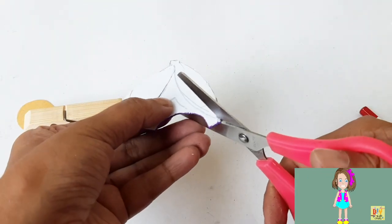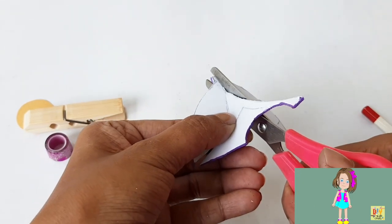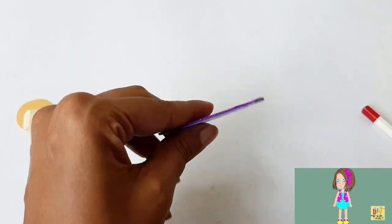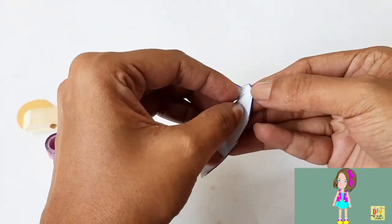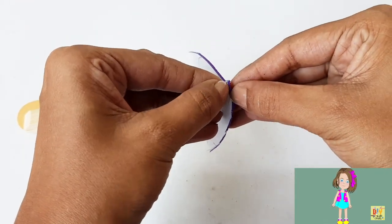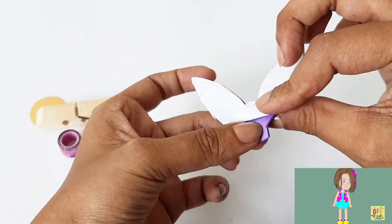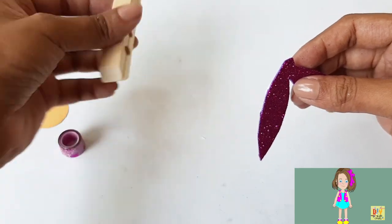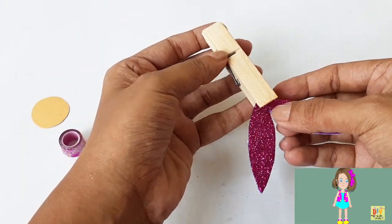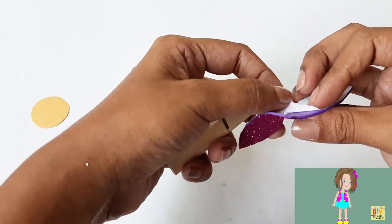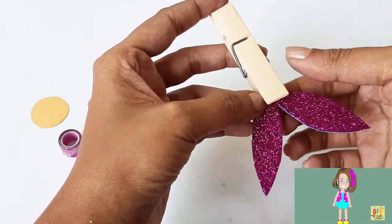Alright, be careful using scissors, kids. So we have now a tail. Let's remove the white cover, alright, leave the hole, just the small part, then attach it to our clothespin.